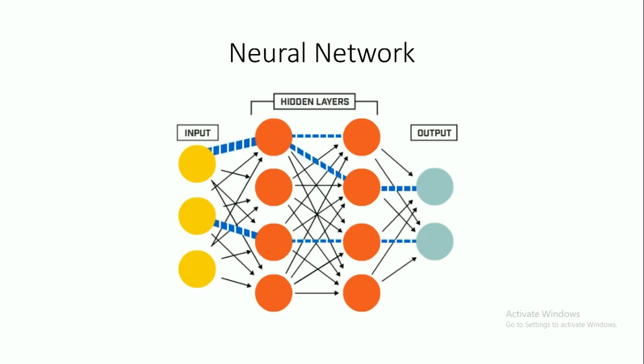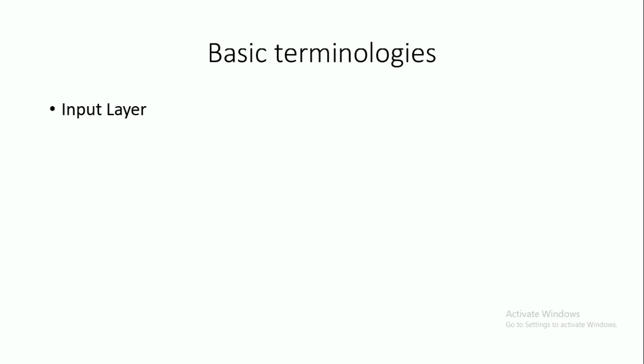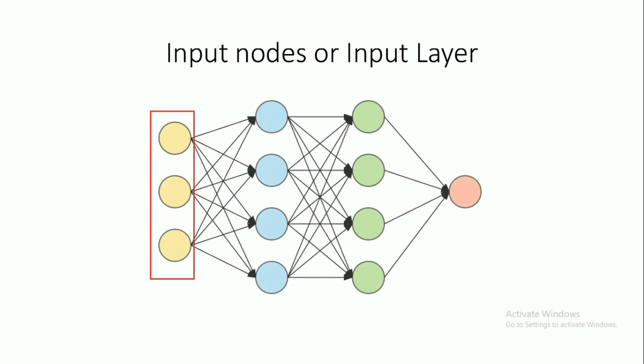This is the typical structure of a Neural Net. These arrows show the input and these colored dots show the Neurons. Before starting feed forward, I would like to introduce some basic terminologies related to Neural Networks: Input Layer, Hidden Layer and Output Layer.